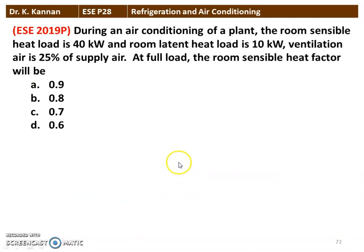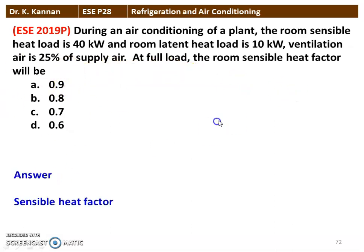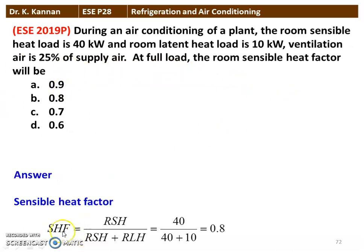Next question from the 2019 question paper: In an air conditioning plant, room sensible heat load is 40 kW, room latent heat load is 10 kW, and ventilation air is 25% of the air supply. At full load, the room sensible heat factor = 40 / (40 + 10) = 40 / 50 = 0.8.